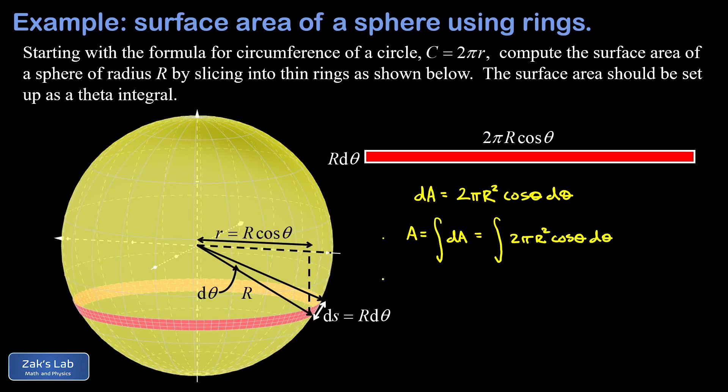To get to the south pole of the sphere, we use an angle of negative pi over two, and to get to the north pole of the sphere, an angle of pi over two.